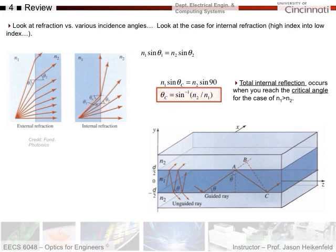Total internal reflection occurs when you reach the critical angle for the case of n1 being greater than n2. What we're interested in today is a waveguide, so here we've got n1 greater than n2 and we've introduced light into it.